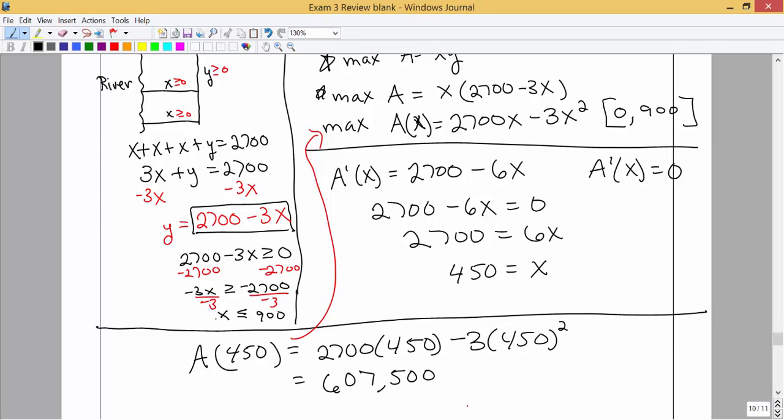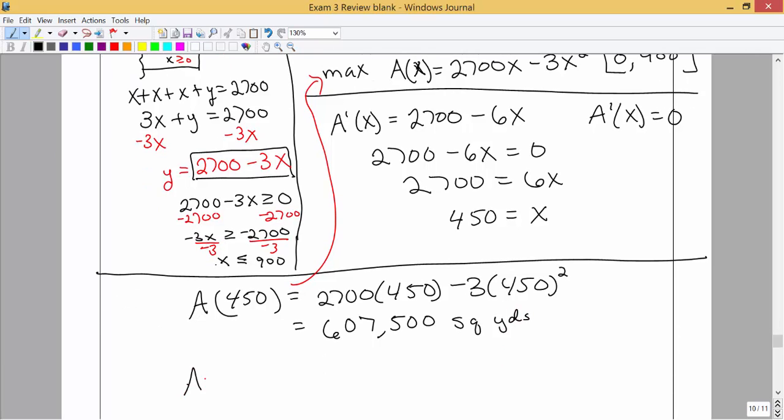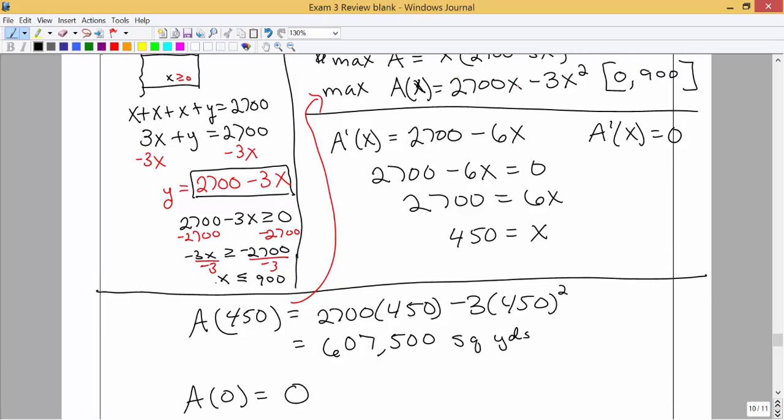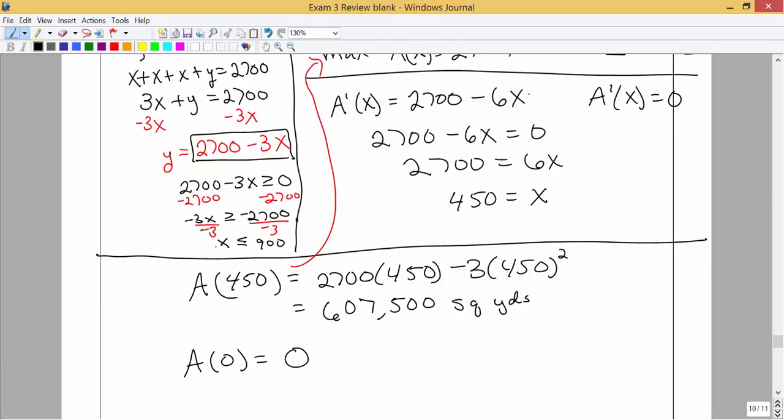And we're talking about area, and we were talking about yards, so this would be square yards. Alright, if we evaluate at the endpoints, so at x equals 0 we get an area of 0. So you can see that pretty clearly: put an x value of 0 in there and we're going to get 0 minus 0. And if we put in the maximum x value, which is 900, put that back in in place of x just like we did with the 450, and we also get 0 for that as well.